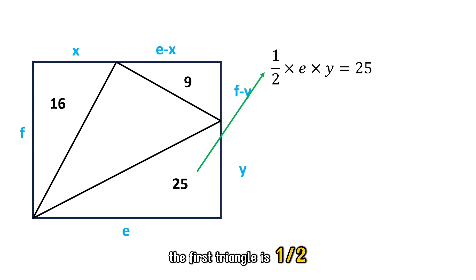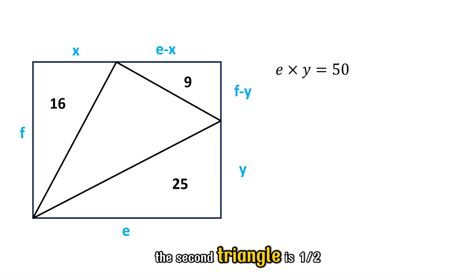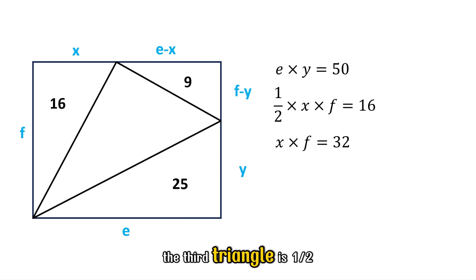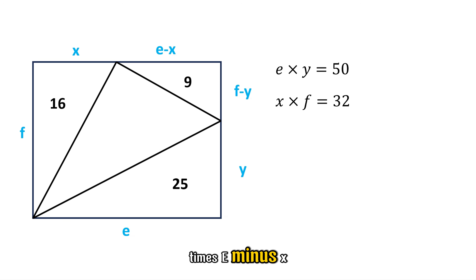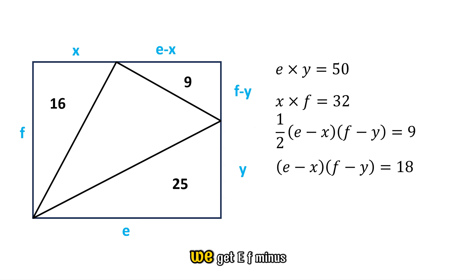Now let's write the areas. The first triangle is one-half times E times Y, and we're told that equals 25 — so E times Y is 50. The second triangle is one-half times F times X, and that equals 16 — so F times X is 32. The third triangle is one-half times (E minus X) times (F minus Y), and that equals 9. If we multiply both sides by 2, we get EF minus EY minus FX plus XY equals 18.